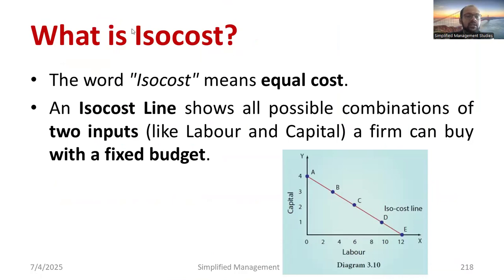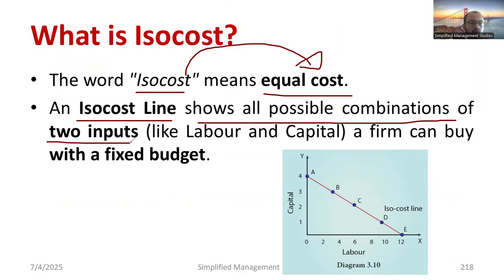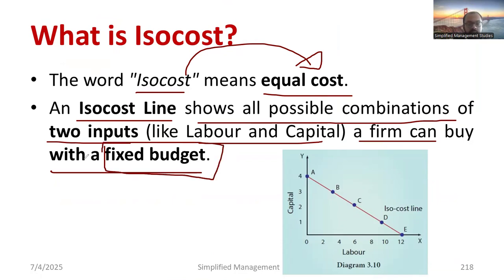The meaning of ISO cost can be summarized as equal cost. ISO cost is nothing but equal cost. The ISO cost line shows all possible combinations of two inputs such as labor and capital that a firm can buy with a fixed budget. Budget is constant.